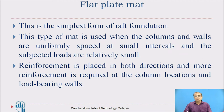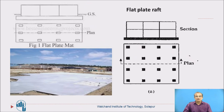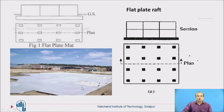Flat plate mat is the simplest form of Raft Foundation. This type is used when columns and walls are uniformly spaced at small intervals and the loads are relatively small. Reinforcement is placed in both directions, with more reinforcement required at column locations and load-bearing walls. Only a slab is provided — no beams — and the slab thickness is uniform throughout, which is why it is called flat plate raft foundation.